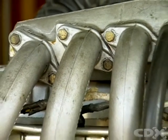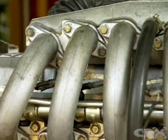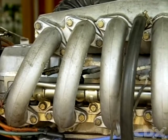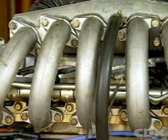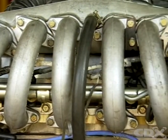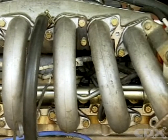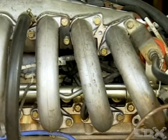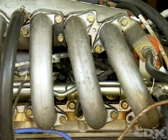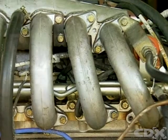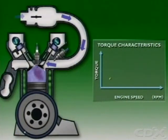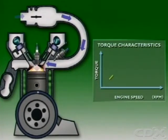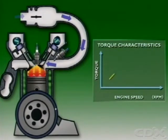The air intake manifold for an EFI multipoint engine normally has long branches of equal length. The long branches increase the pulsing effect of the airflow in each pipe and help charge the cylinders. The more air drawn into the cylinder, the denser is the air-fuel mixture when the inlet valve closes.